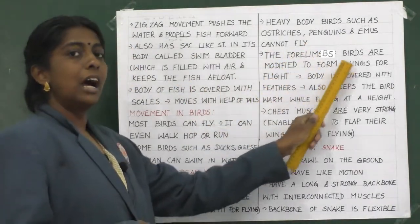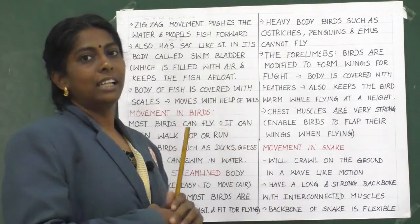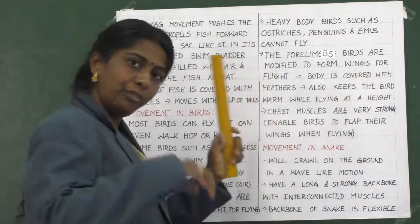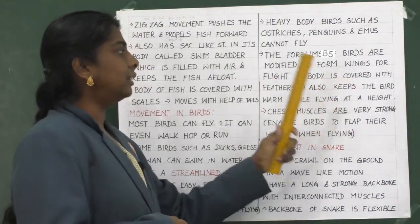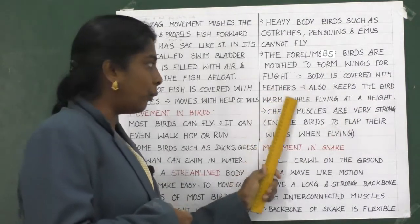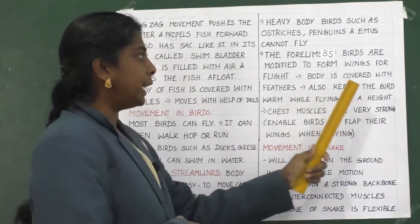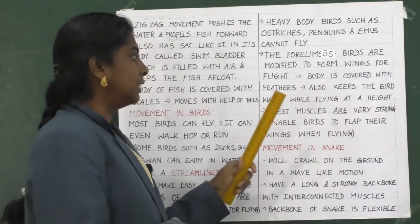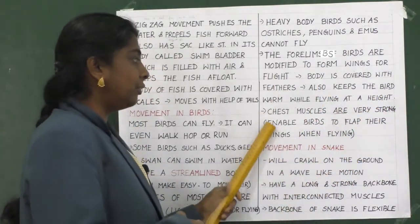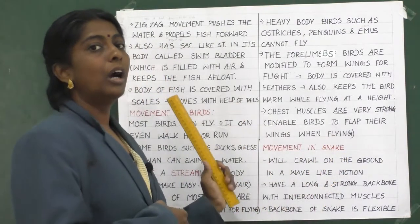The forelimbs of birds are modified to form wings for flight. The body is covered with feathers, which also keep the bird warm while flying at a height. The chest muscles are very strong, enabling the birds to flap their wings while flying.